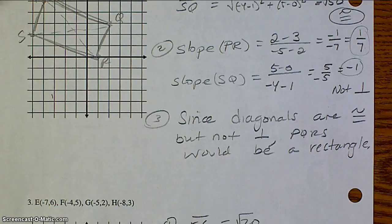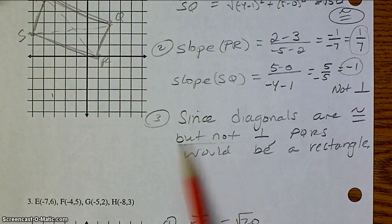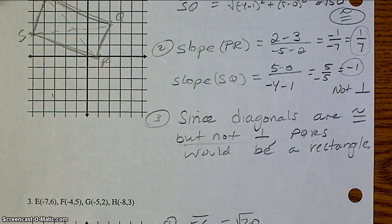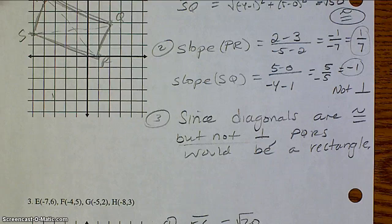Here is an example of an explanation that would earn full credit on a quiz. Since the diagonals are congruent, but they're not perpendicular, PQRS would be a rectangle. It is important to put 'even though they're not perpendicular' because if they are perpendicular, that would be a different type of special quad.